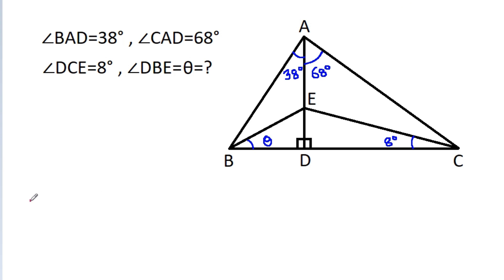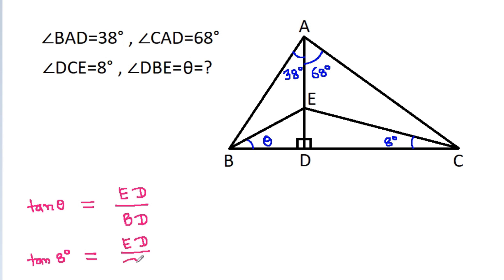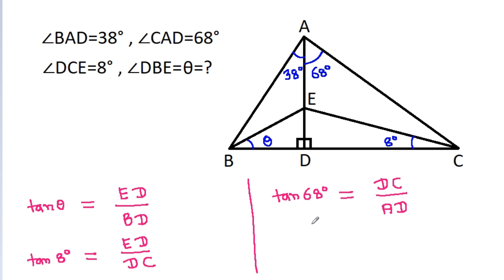So, tan theta will be equal to ED by BD, and tan 8 degrees will be equal to ED by DC, and tan 68 degrees will be equal to DC by AD, and tan 38 degrees will be equal to BD by AD.